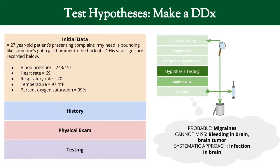Now let's make some hypotheses. Given this information, do we have any possible explanations? Migraines are a common cause of headaches, so it could be a migraine. What would be a disaster if we missed it? Bleeding in the brain or perhaps a brain tumor — we want to make sure it's not that. Using a systematic approach, we might also consider an infection in the brain. This is an abbreviated list, but for this example our differential diagnosis is: migraines, bleeding in the brain, brain tumor, and infection in the brain.